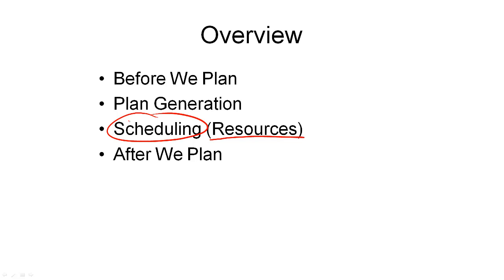Scheduling is a field that is really much larger than artificial intelligence planning, with lots of subproblems and lots of algorithms to solve these problems. So what I'm going to do here is only briefly talk about the different types of resources there are, and then talk about how planning and scheduling can be integrated.